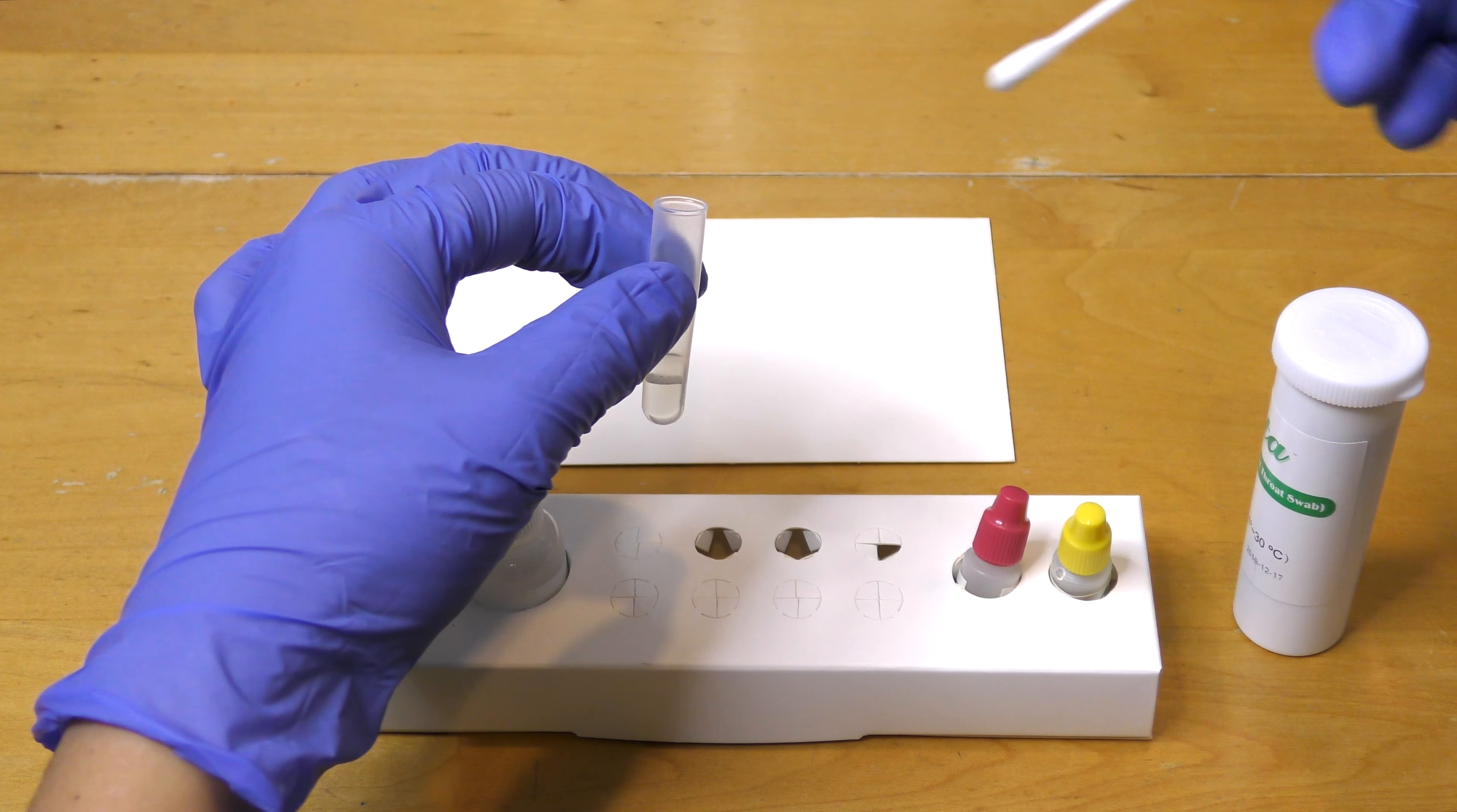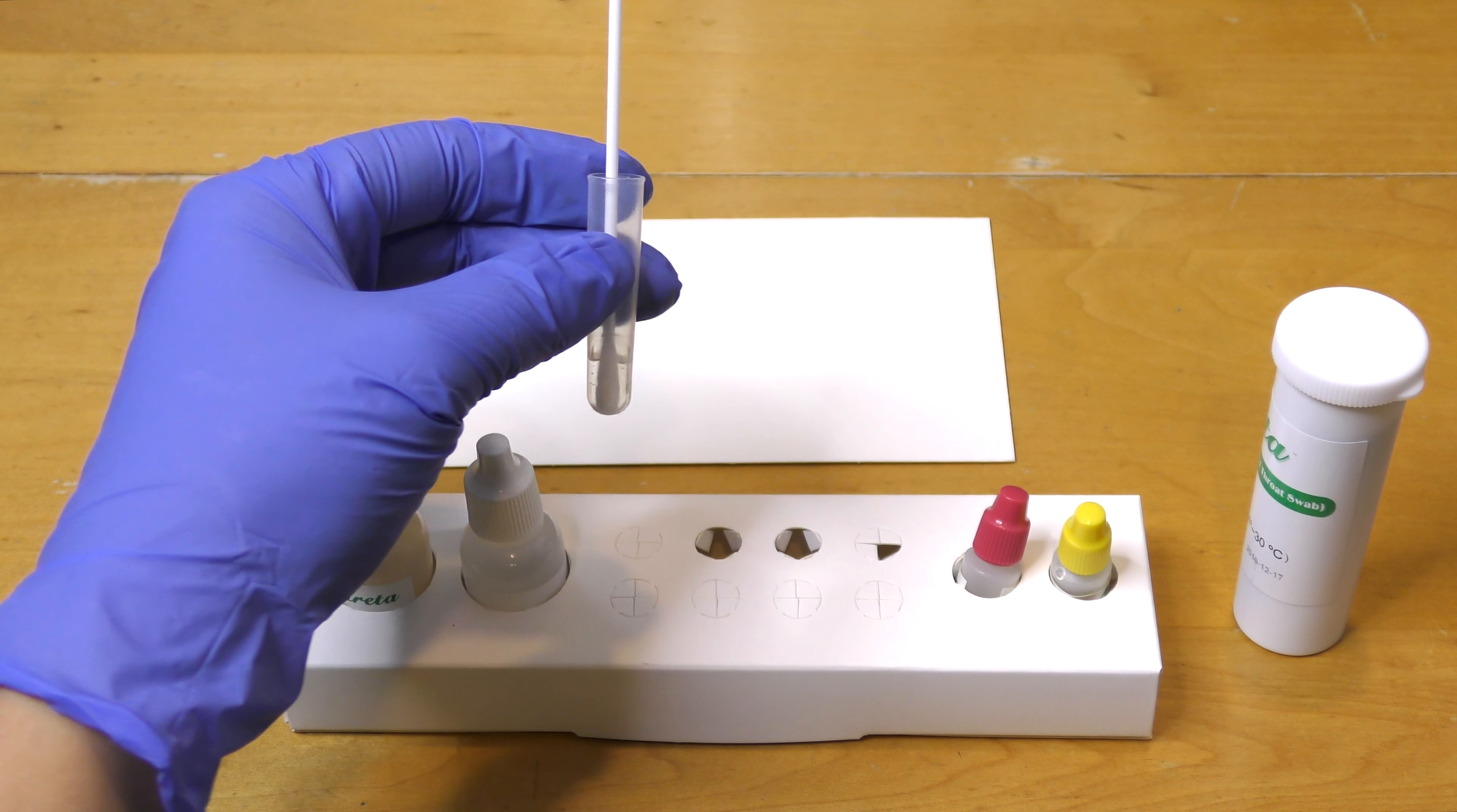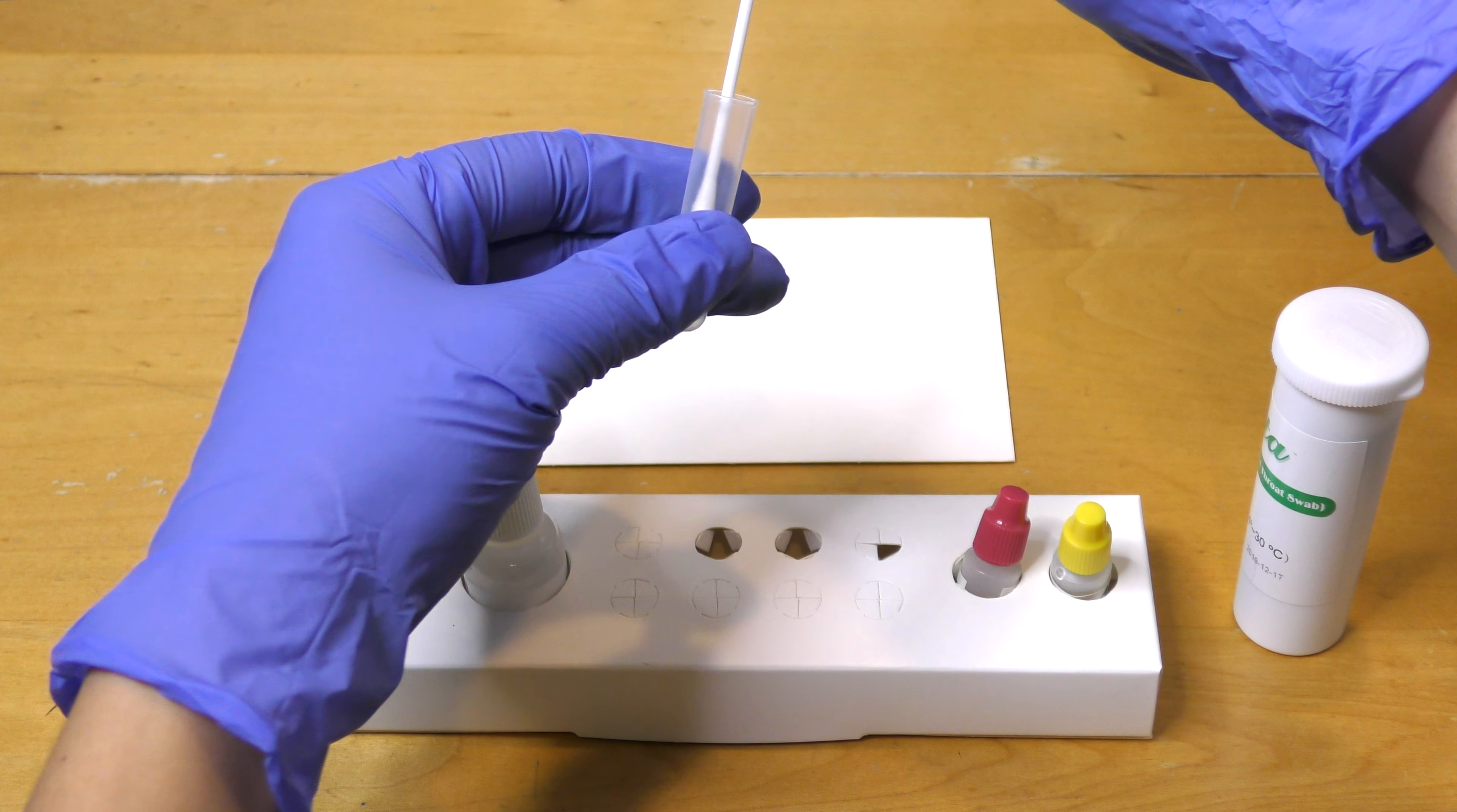The swab specimen is then placed into the tube and swirled at least 10 times. The swab should remain in the tube for 1 minute after which it is removed while squeezing the swab head to remove as much liquid as possible.